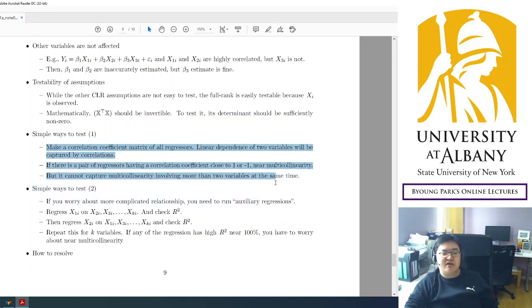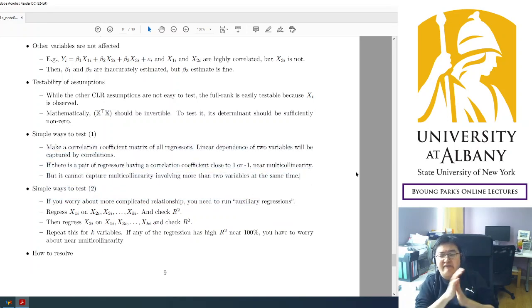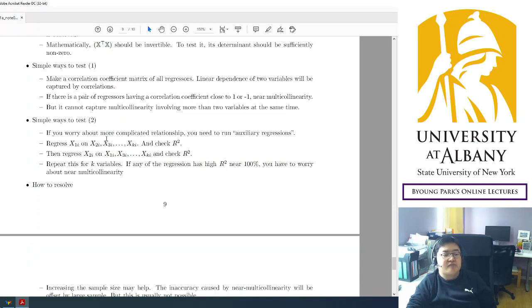So, the problem is, this is very simple because many statistical programs have automatic built-in command to calculate correlation coefficients. So, it's simple. However, the problem here is, if multicollinearity is caused by three variables together, then the correlation coefficient cannot capture those problems. Because correlation coefficient is defined only for a pair of variables. It cannot extend, it cannot be extended to three variables. So maybe not enough.